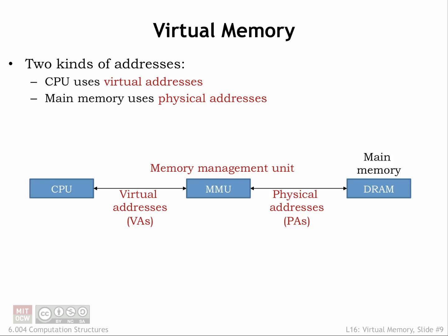Here's how our virtual memory system will work. The memory addresses generated by the CPU are called virtual addresses to distinguish them from the physical addresses used by main memory. In between the CPU and main memory there is a new piece of hardware called the Memory Management Unit. The MMU's job is to translate virtual addresses to physical addresses.